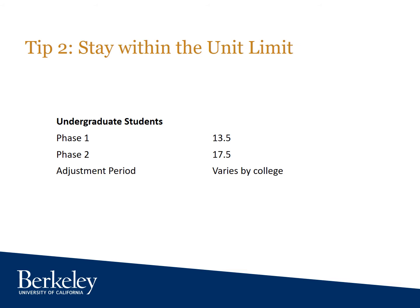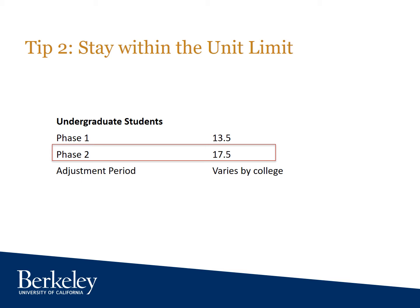Tip number two: stay within the unit limit. Hopefully you've already learned that enrollments are handled in three phases at UC Berkeley. During phase one, undergraduate students have access to 13.5 units. During phase two, this bumps up to 17.5 units. And during the adjustment period, all the units become available to students — for the College of Engineering, that's 20.5 units for the semester.